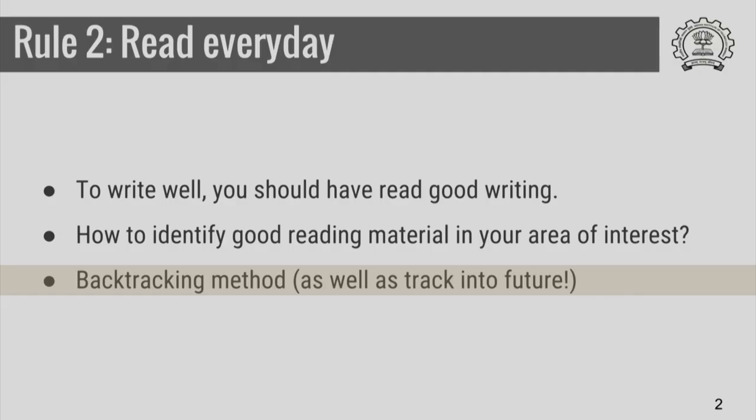Now, it is very difficult to identify good reading material, but there are a couple of tricks that I use. One of them is known as the backtracking method. In this method, you identify one paper in that area — whatever paper. It is not important that it is a good paper or an important paper. Any paper in that area would do.